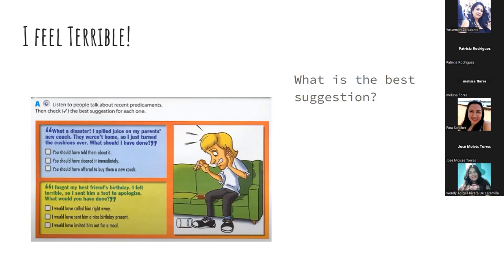Next: I forgot my best friend's birthday. I felt terrible, so I sent him a text to apologize. What would you have done? Options: I would have called him right away; I would have sent him a nice birthday present; or I would have invited him out for a meal. — I would have invited him out for a meal. — Yes, that's a very good suggestion. Very good.